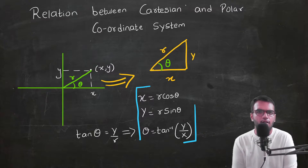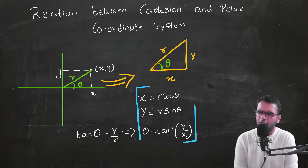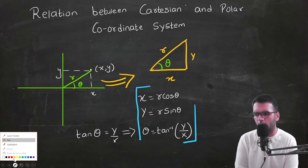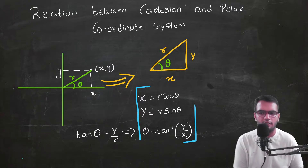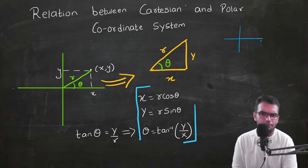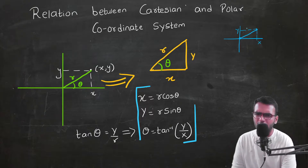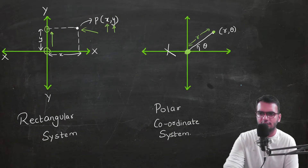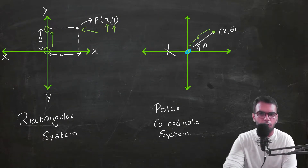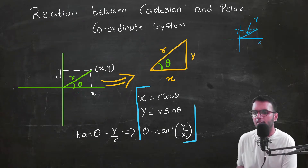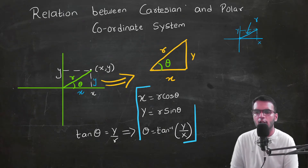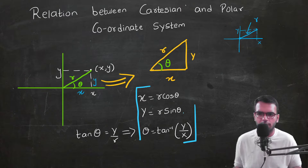Let us revise the relationship between the Cartesian and polar coordinate systems. If we have a point with Cartesian coordinates x and y, and draw a line r from the origin to the point, we can apply sin, cos, and tan to find the correlations between both systems.